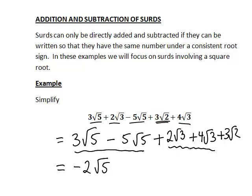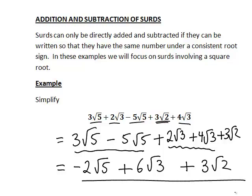Similarly, if we look at our group of terms involving √3, we have 2√3 + 4√3. So 2 lots of the square root of 3 plus another 4 lots of it will give us +6√3. And that 3√2 term on the end does not simplify any further. So this will be our final answer.